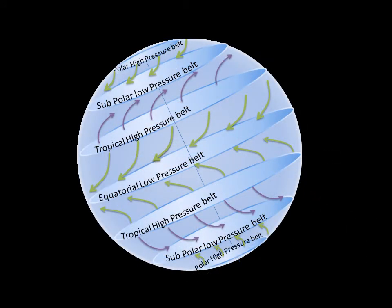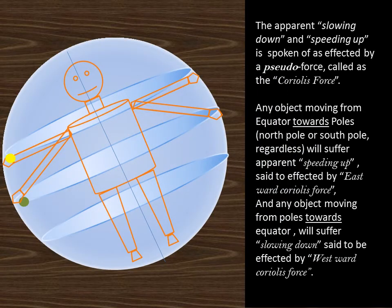The movement of wind across the pressure belts of the Earth also undergo deflection attributed to the Coriolis force. The apparent slowing down and speeding up is spoken of as affected by a pseudo-force, called as the Coriolis force.